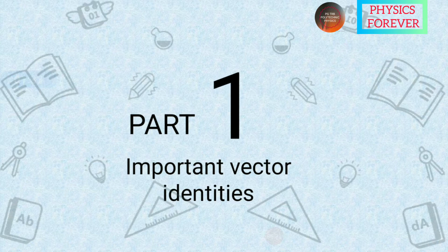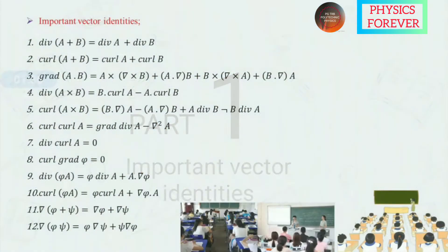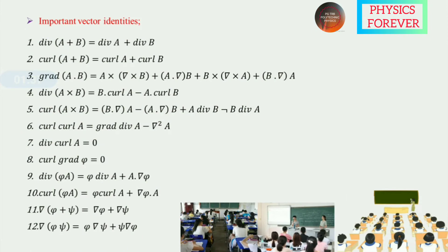Topic one: important vector identities. The divergence of (A plus B) equals divergence A plus divergence B.